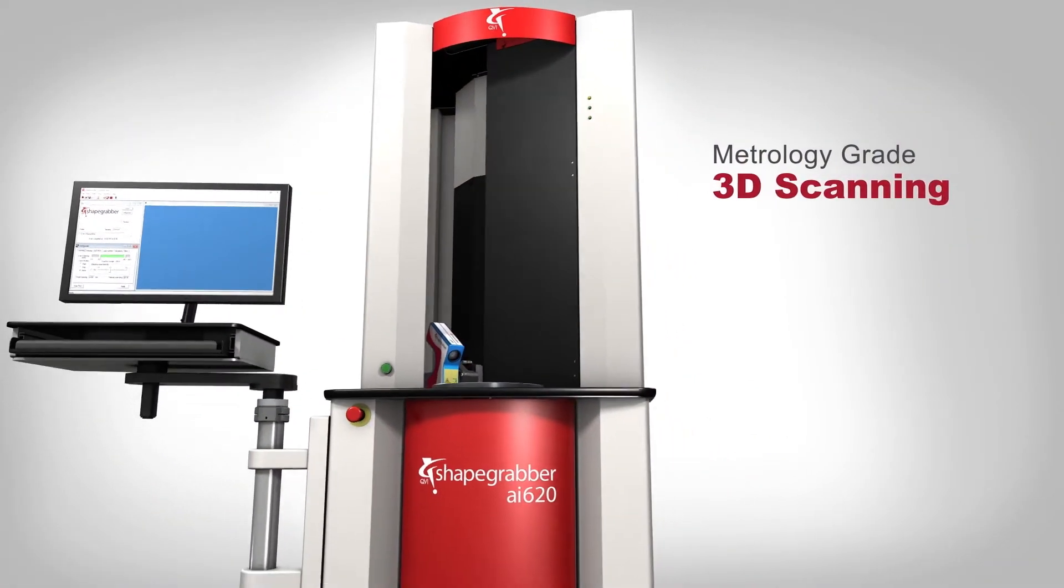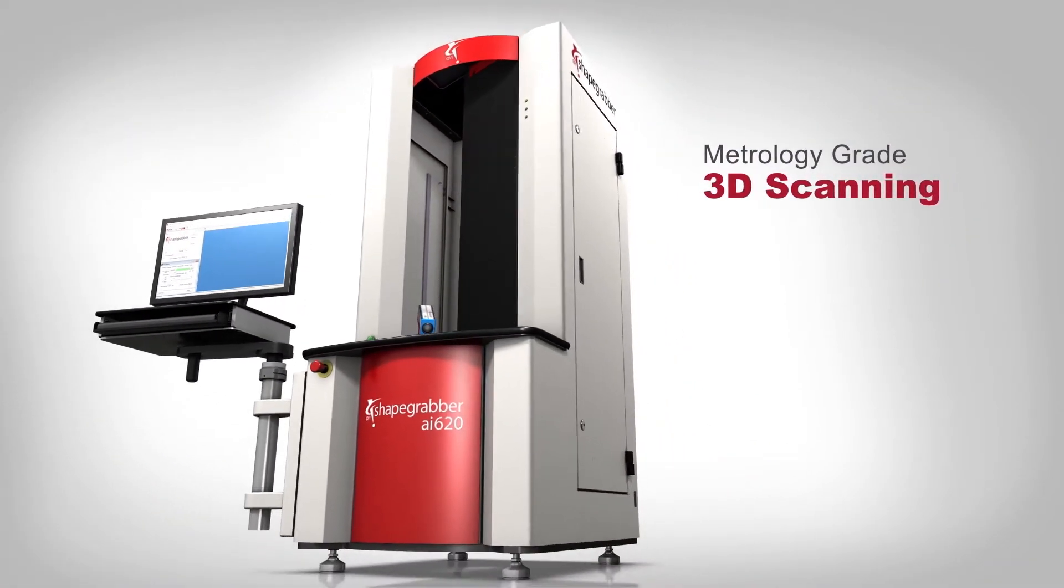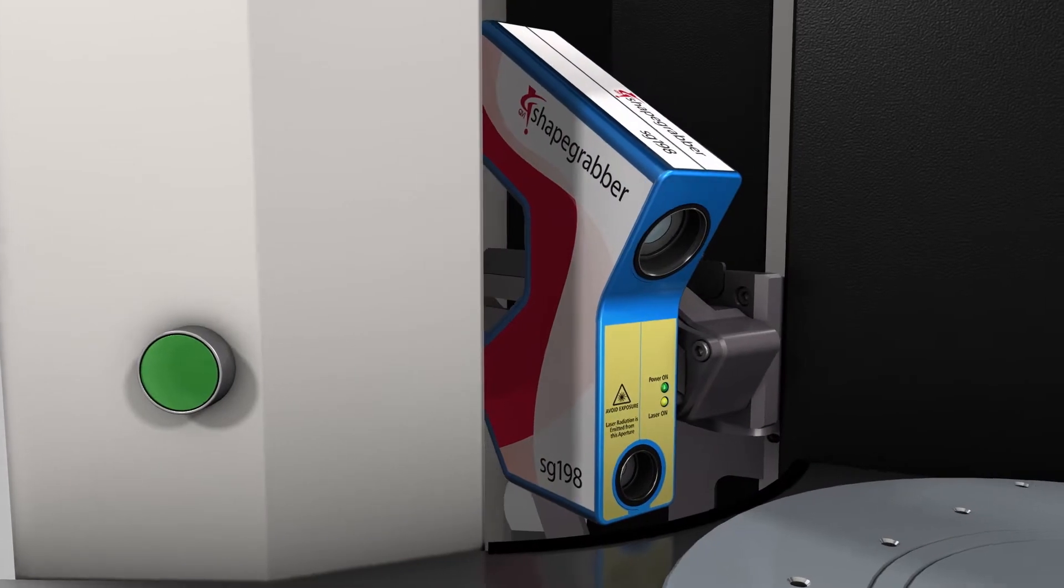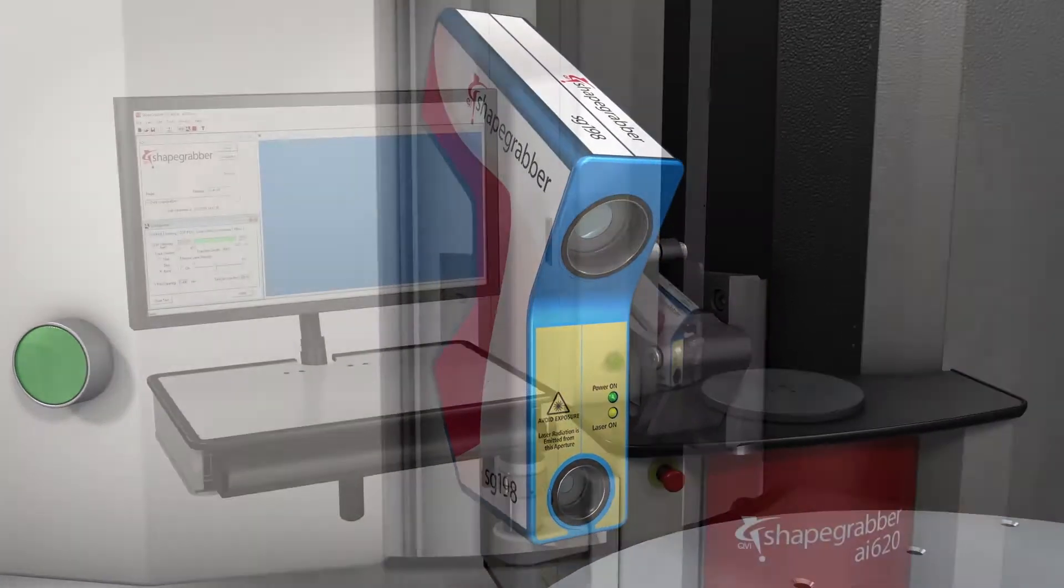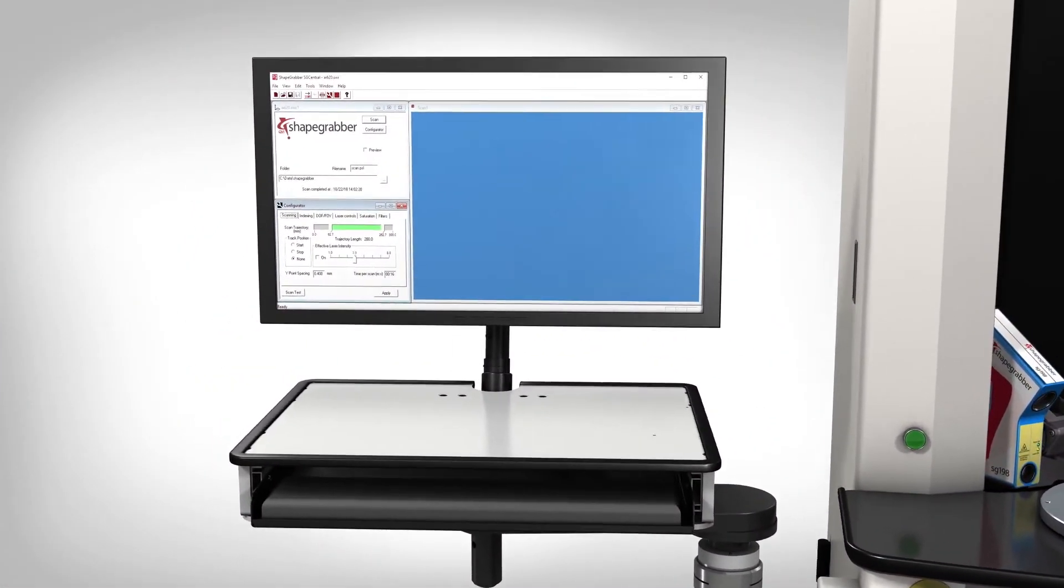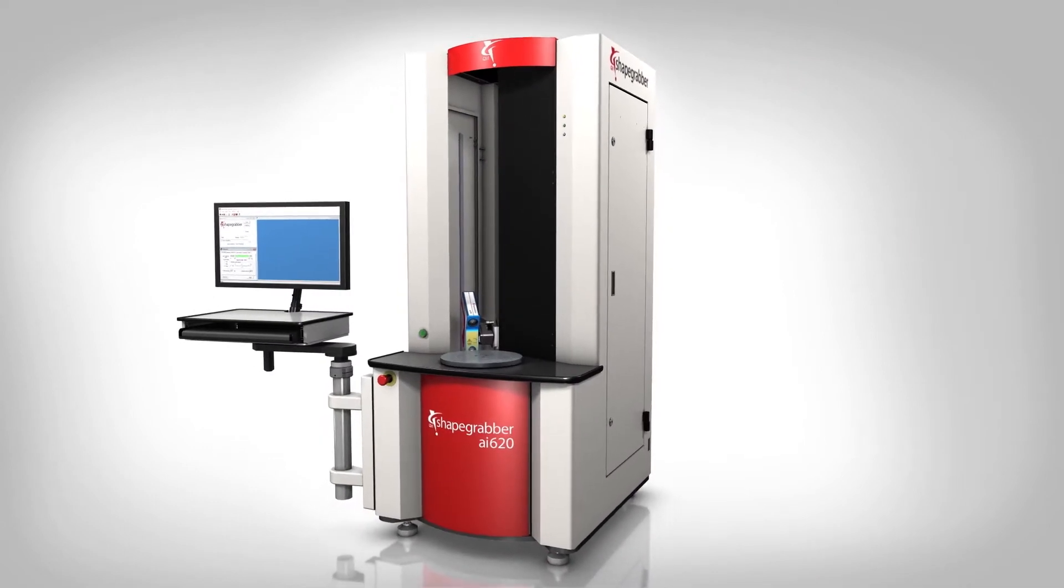ShapeGrabber AI620 is completely self-contained with all critical components, electronics, optics, controllers and processor integrated in an ergonomic space saving package.